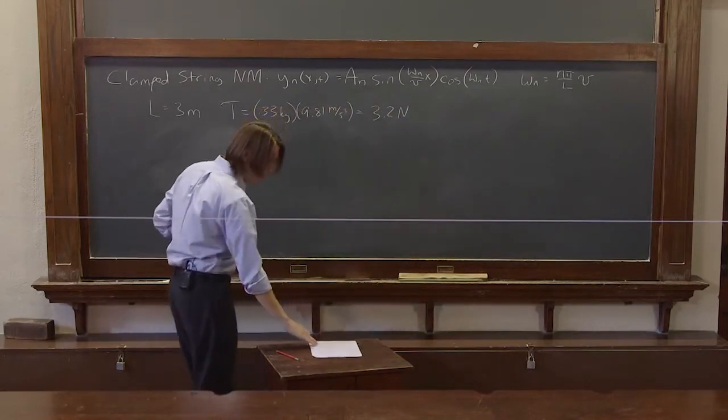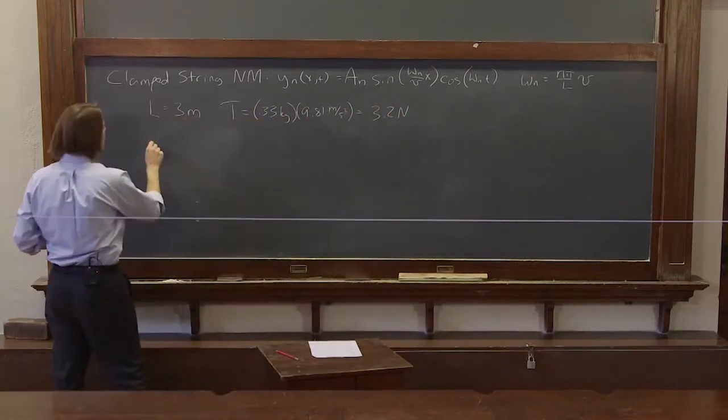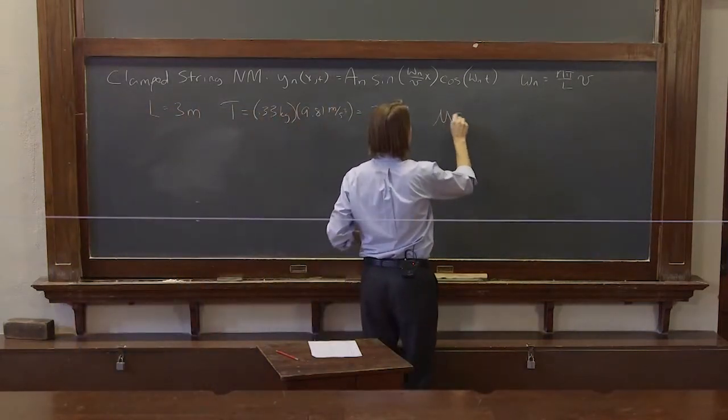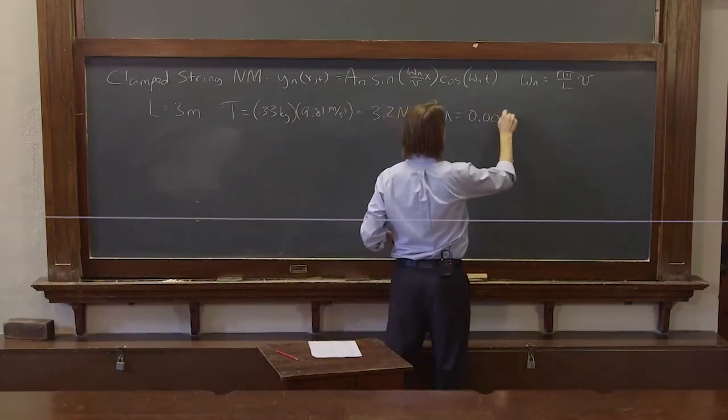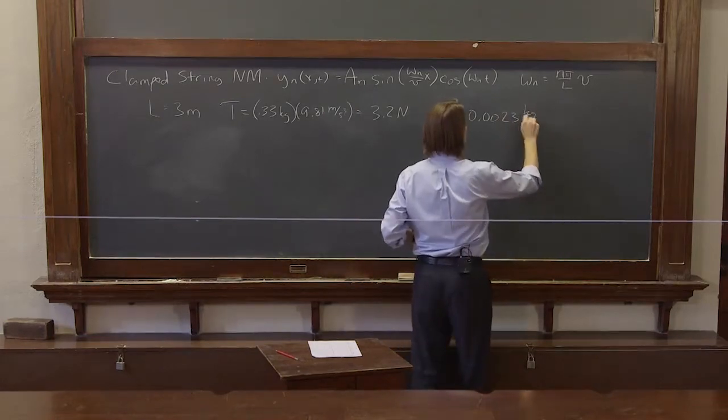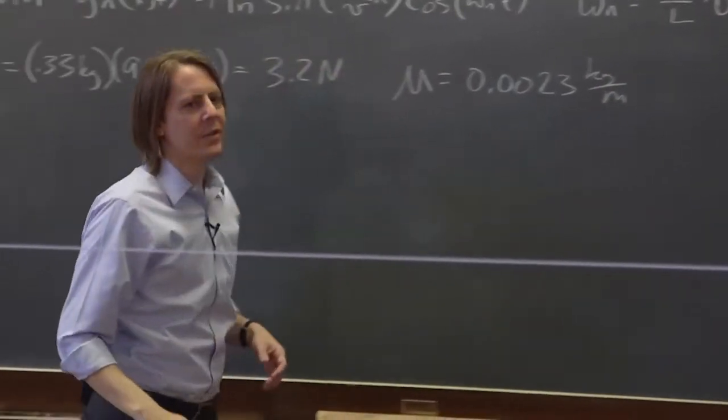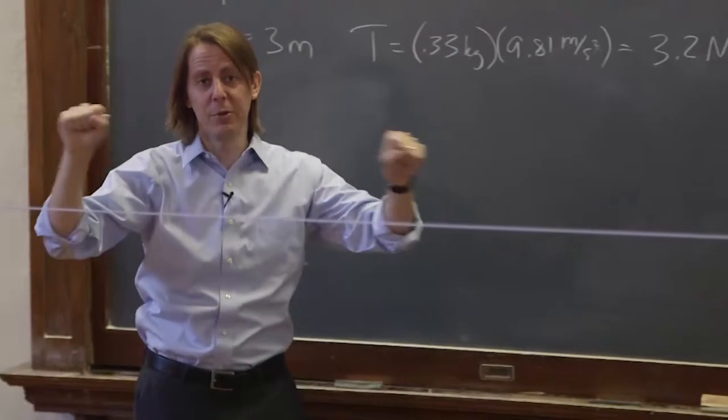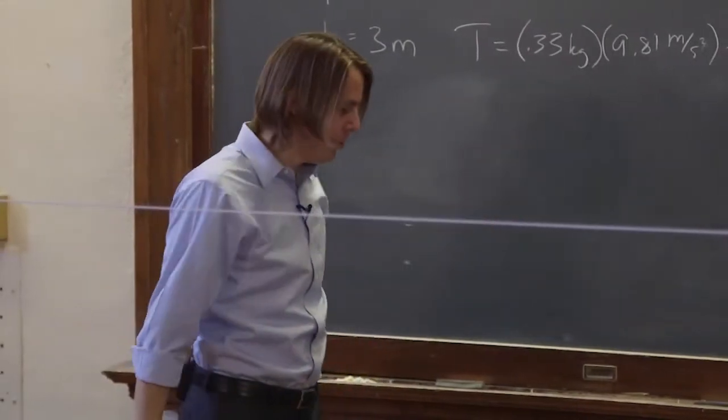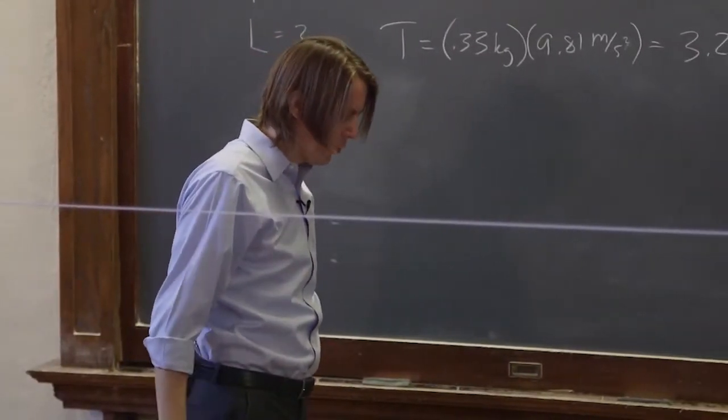And then, finally, the mass density I measured just by weighing the string, mu, is 0.0023 kilograms per meter. And that's corrected for the stretch. The mass density goes down when you stretch an elastic string, because the same mass becomes longer.